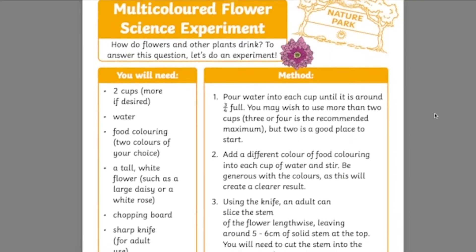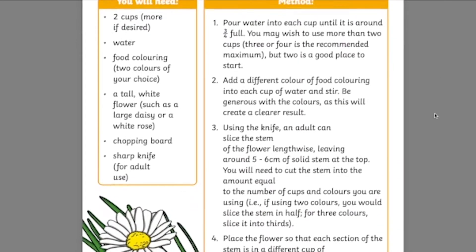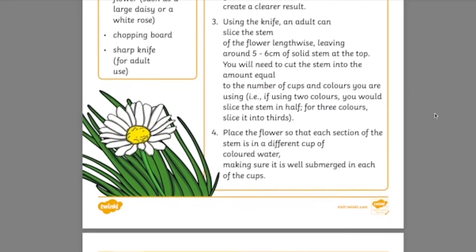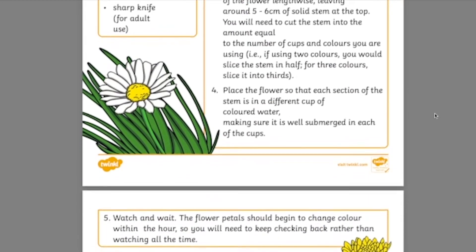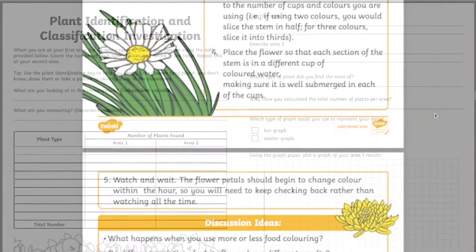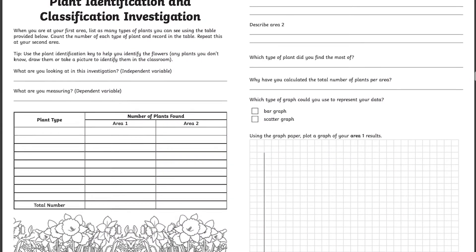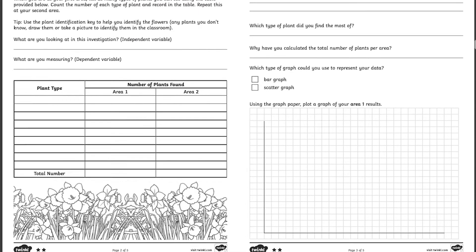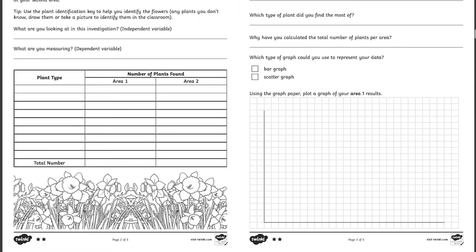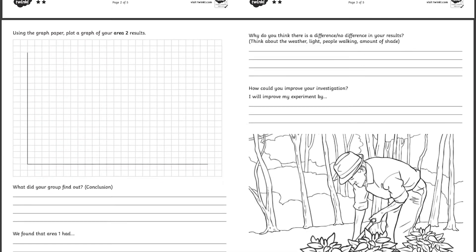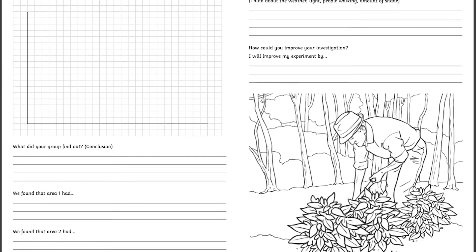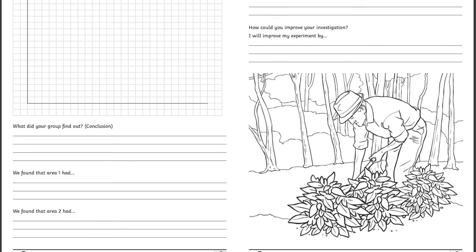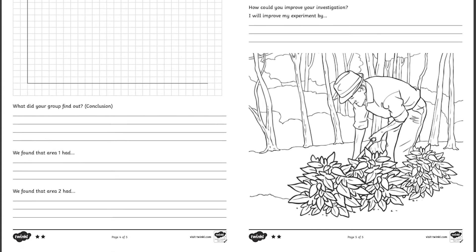For a more interactive science investigation, we also have the multi-colored flower science experiment which children are sure to enjoy, as well as a plant classification and identification science investigation where children must measure the amount of plants in an area before answering word problems and plotting their data in an appropriate graph.